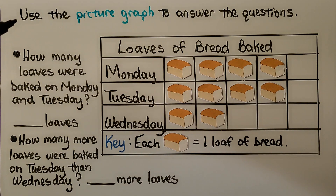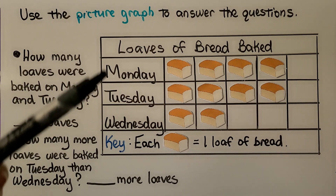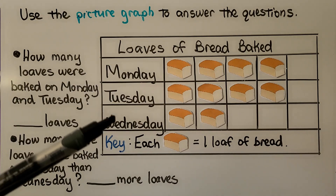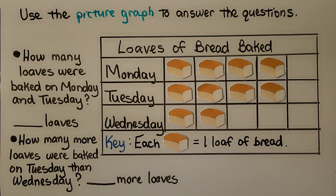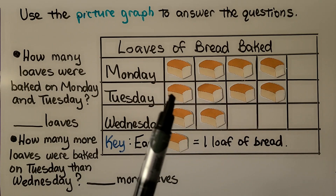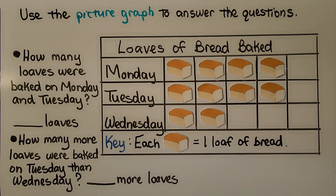It's telling us to use the picture graph to answer the questions, so let's look at it first. It says 'Loaves of Bread Baked.' We have Monday, Tuesday, and Wednesday. The key tells us that each loaf of bread picture equals one loaf of bread. How many loaves were baked on Monday and Tuesday? Monday has four and Tuesday has four — four plus four is eight loaves for Monday and Tuesday.